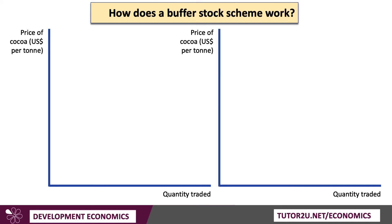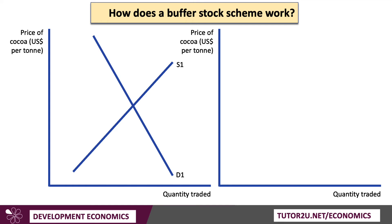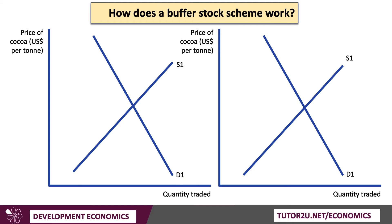Let me walk you through how to use an analysis diagram to show how Buffer Stock works. I strongly recommend you use a double diagram here because it gets a little complicated with lots of curves shifting around. Let's take the example of producers in Ghana deciding to introduce a Buffer Stock Scheme for cocoa. I've drawn the demand and supply curves as fairly inelastic, and it's exactly the same diagram on the left and right hand side. The equilibrium is where supply meets demand — let's call that price P1.